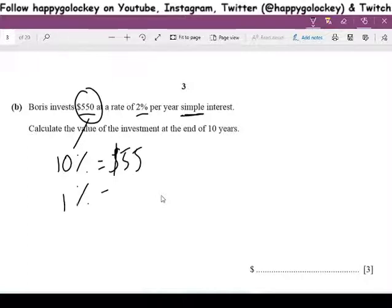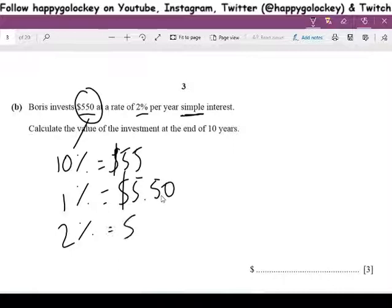Then 1% is divide that by 10, $5.50. So if 1% is $5.50, then 2% is double 1%, so that'll be $11.